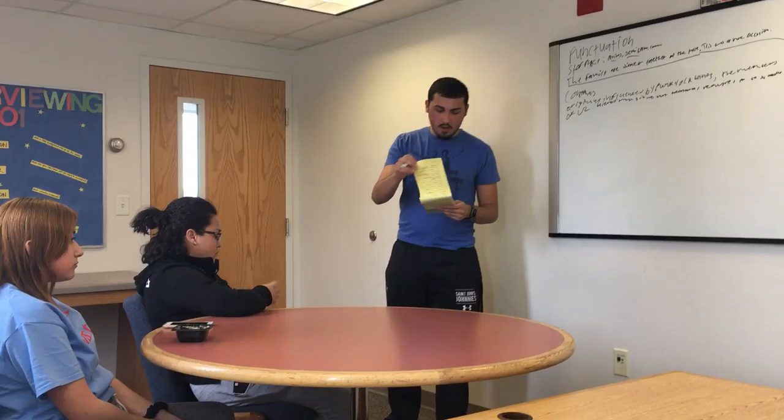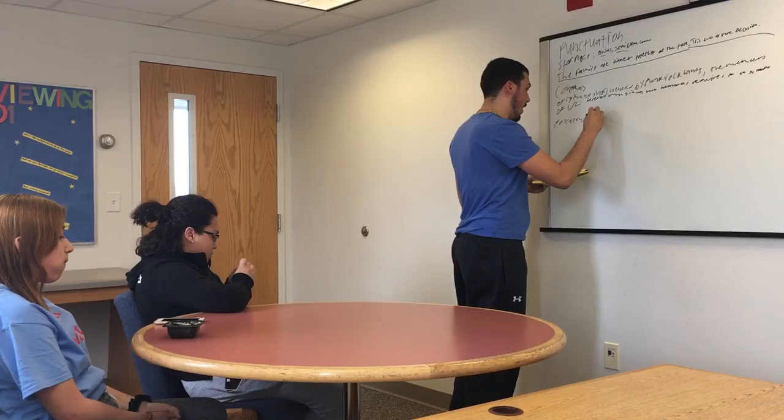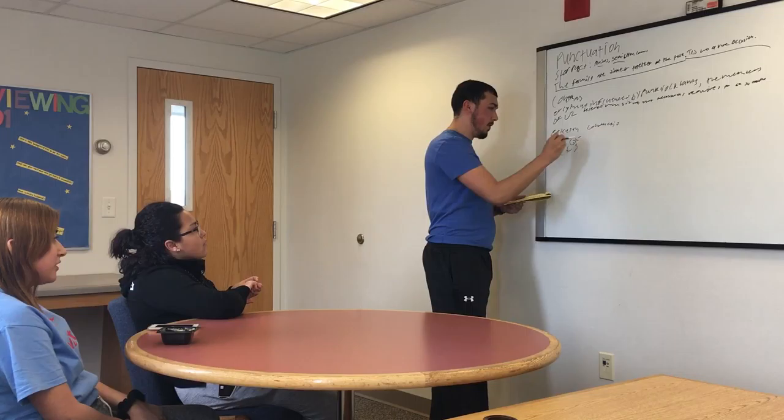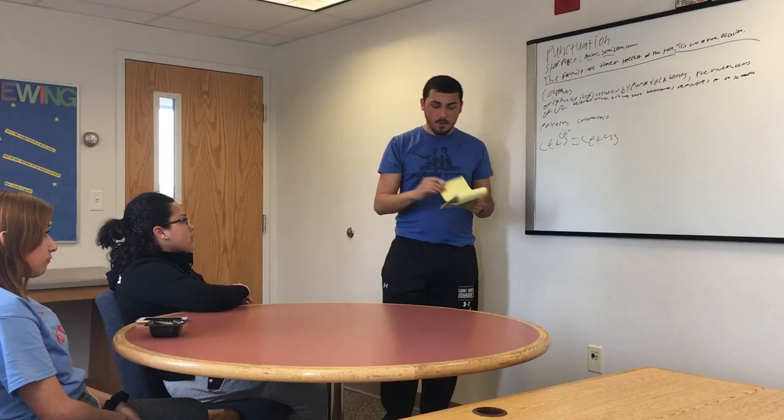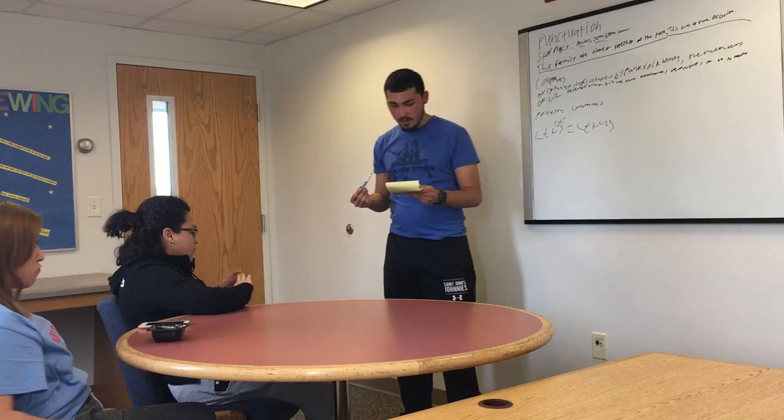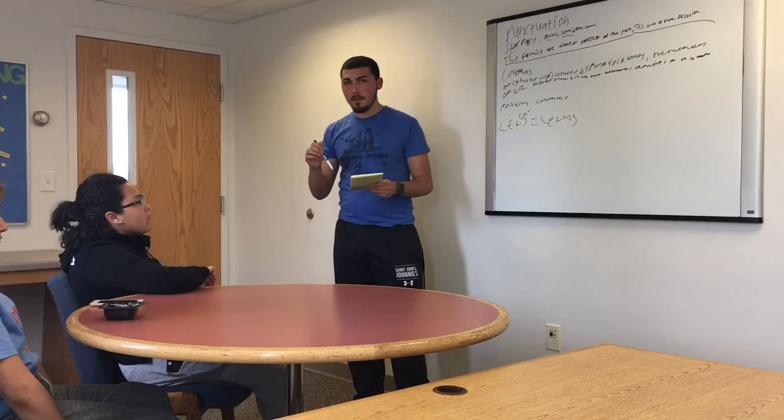Apostrophes are used for possession or contraction. So like 'let's' — that's the apostrophe right there. It's a contraction, so it's two words — 'let us' — put into one. And then for possession, for example, 'the album's four singles all won Grammy awards' — the possession is 'the album's' because the album possesses the four singles. And that's punctuation.